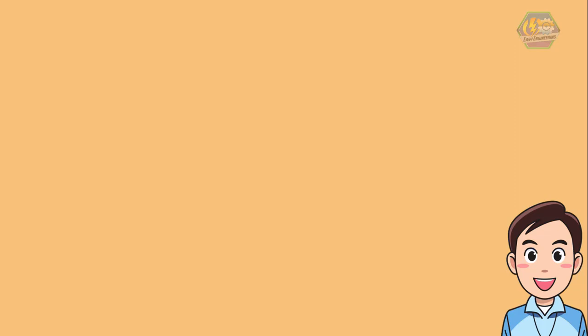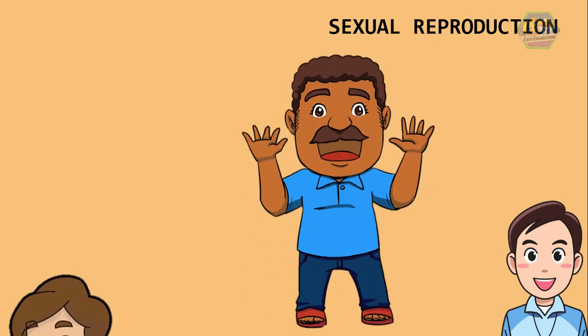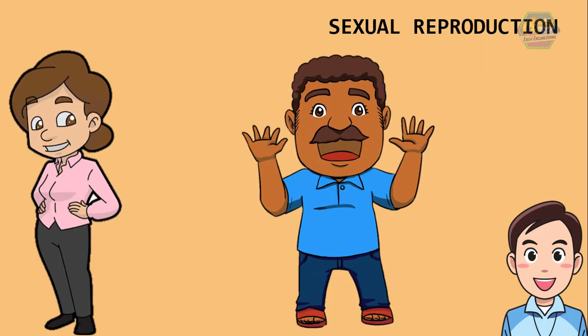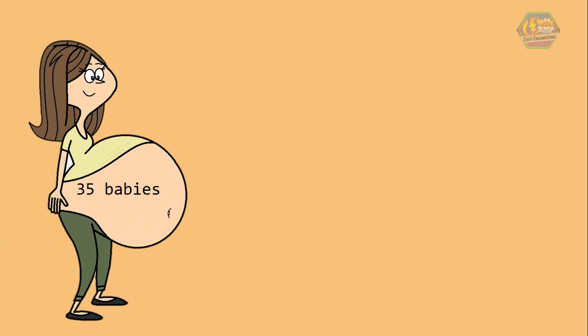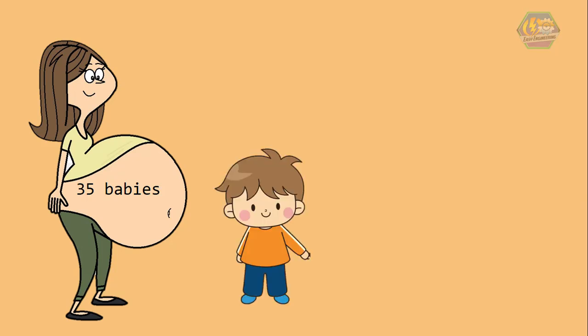For most animals like us, we use sexual reproduction. That means our two sex cells — one from a male and one from a female — join together to create the baby. Fun fact: did you know that an average woman can give birth to 35 babies in a lifetime? But only if they want to. So if our mothers wanted more babies, we could have had 34 brothers and sisters. Amazing, right?